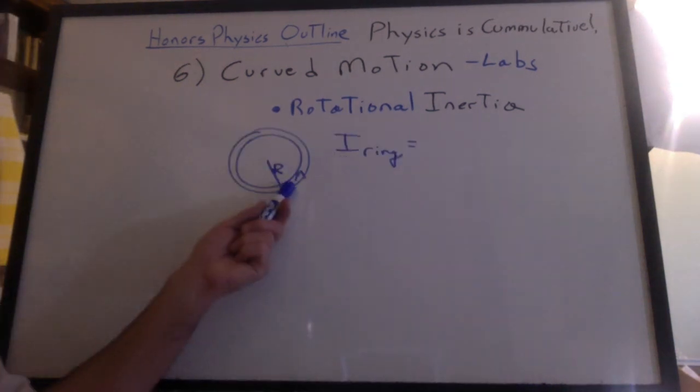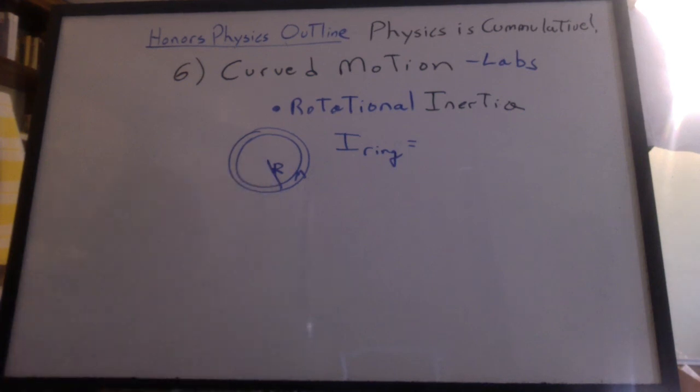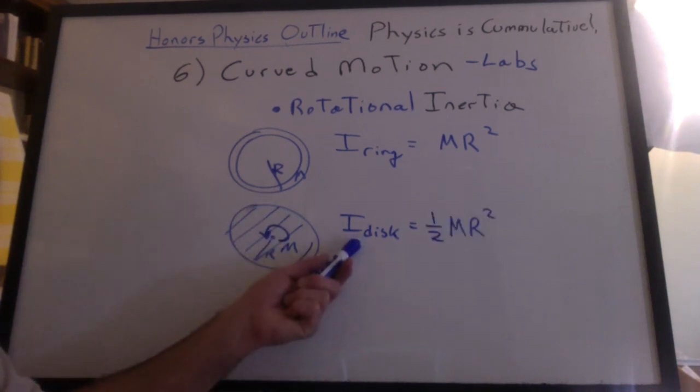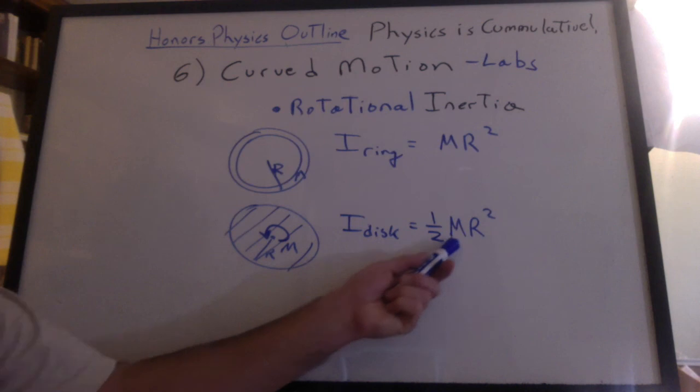In a ring, we saw that all the mass was at the full distance r from the axis of rotation, mr squared. In a disk, we have some mass close to the axis of rotation. It only has to make a small circle compared to the outside. Its rotational inertia is less. It's only one half mr squared.